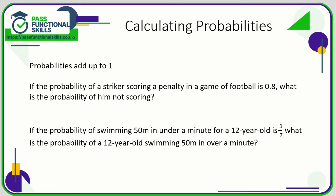Probabilities need to add up to one. If the probability of a striker scoring a penalty is 0.8, then the probability of him not scoring is 0.2, because 0.8 plus 0.2 equals one — he either scores or he doesn't. Similarly, if the probability of swimming 50 metres in under a minute for a 12-year-old is one seventh, then the probability of taking over a minute is six sevenths, because one seventh plus six sevenths equals seven sevenths, which is one.